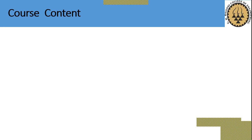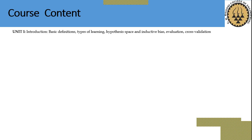In this course, Unit 1 covers the introduction, including some basic definitions, different types of learning, the hypothesis space and bias, evaluation, and cross-validation — how we evaluate machine learning algorithms and how we can validate our data.